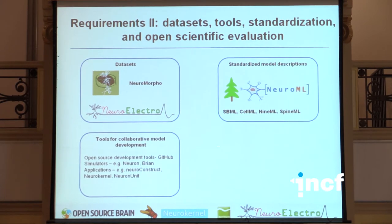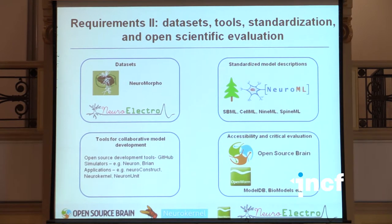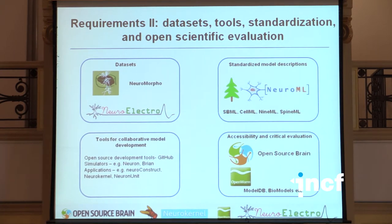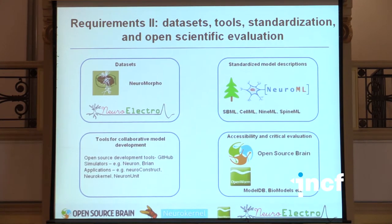We have the example from systems biology, which has shown us that this is actually a very effective way forward. We mustn't forget about the experimentalists, because ultimately they know how the system works — they're intimately versed in the behaviors. Unless we can get them into this cycle of model development, we're never going to get really realistic, robust models. We need to combine standardized model descriptions with repositories that enable people who aren't familiar with coding to actually go into the model, see the details, and see how it behaves. Initiatives like Open Source Brain and Open Worm are trying to do that, as well as ModelDB and BioModels from systems biology.